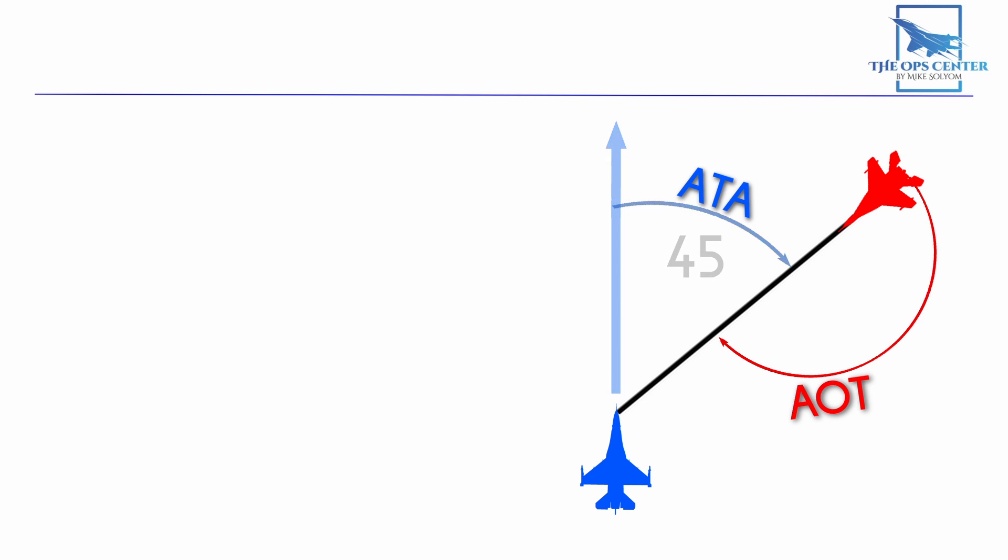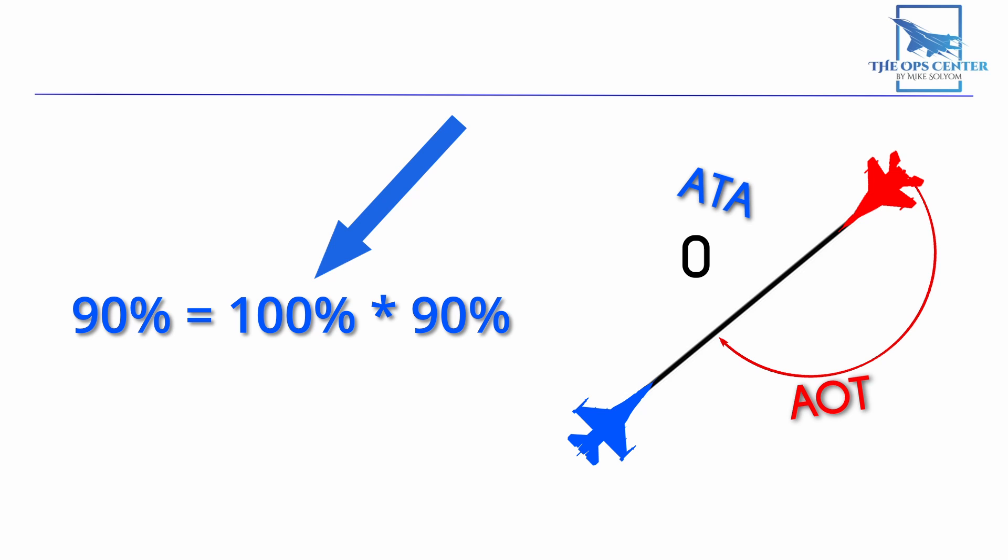But what if we turn the shooter directly towards the target? Now the ATA part of the formula goes up to 100, and the final TIPWI becomes 90%. Another way to look at it is this visualization.